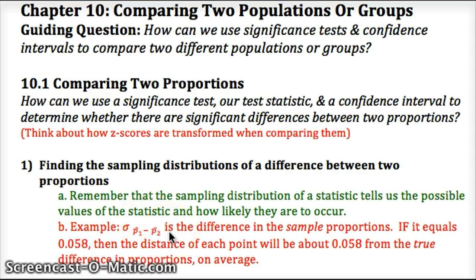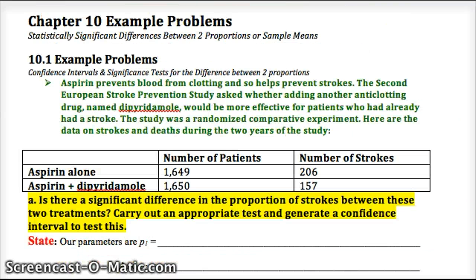Pause here and open the outline in Schoology and we're going to look at an example problem. Aspirin is well known to help prevent clotting and prevent strokes from happening when a blood clot gets to the brain. They're looking to see if this drug used in conjunction with aspirin reduces the number of strokes even further. Here's a randomized comparative experiment where they looked at aspirin alone and aspirin with this drug, and they want to know is there a significant difference in the proportion of strokes between these two treatments.